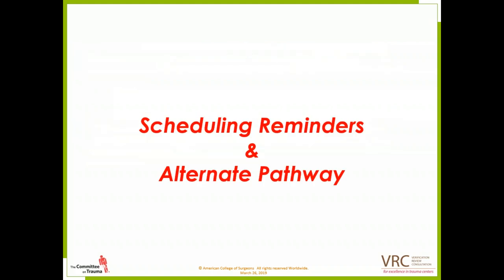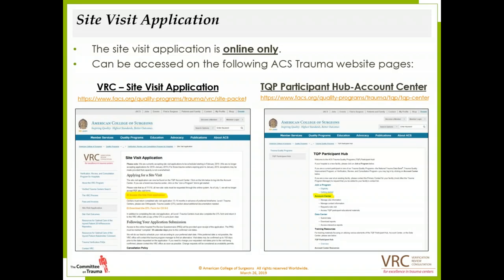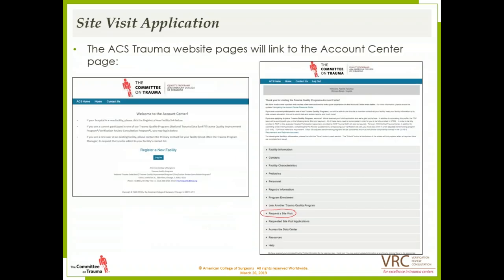The site visit application is online only and can be accessed on the ACS trauma website pages where you would normally get your VRC site visit application, or in the participant hub account center. Once you click on those links, you'll see the account center login page. When logging on, you would use the same username and password that you used to access the TCLIP education portal — it's not the same as your PRQ login. Once logged in, you'll see facility information, contacts, etc.